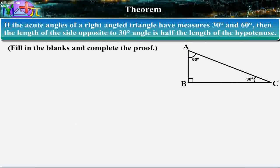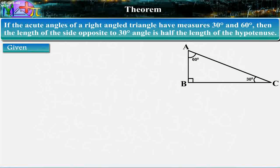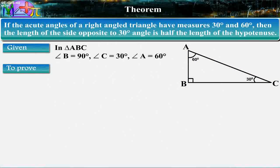Fill in the blanks and complete the proof. Given: In triangle ABC, angle B is equal to 90 degrees, angle C is equal to 30 degrees, angle A is equal to 60 degrees. To prove: AB is equal to 1 upon 2 AC.